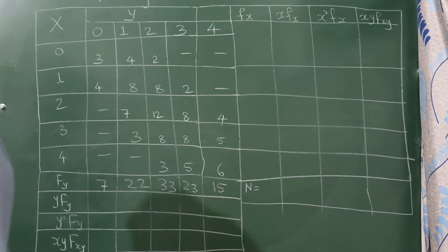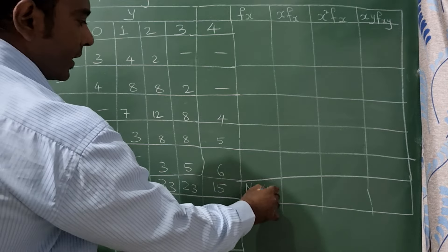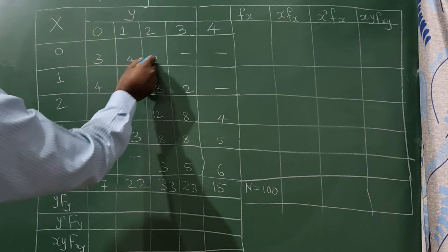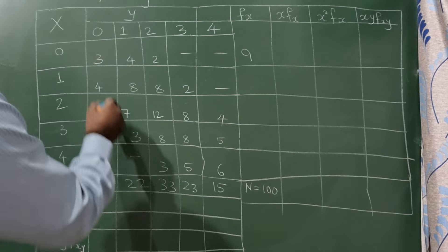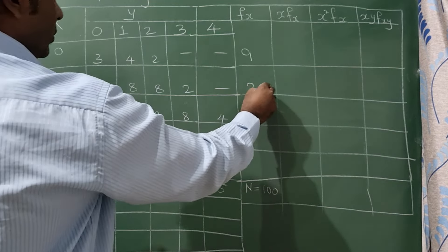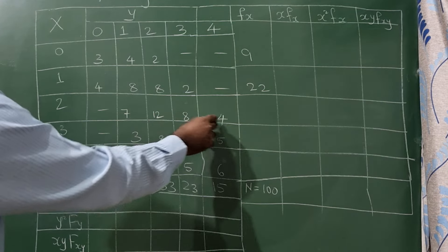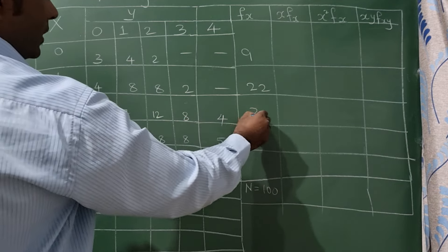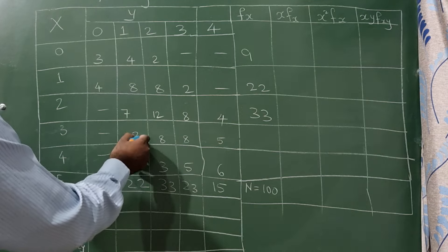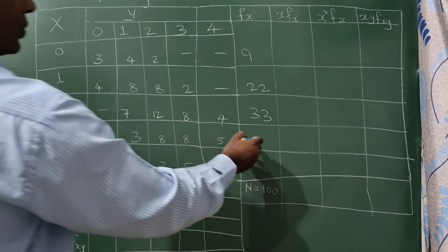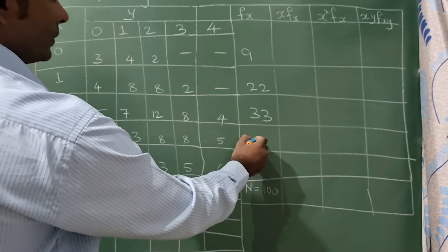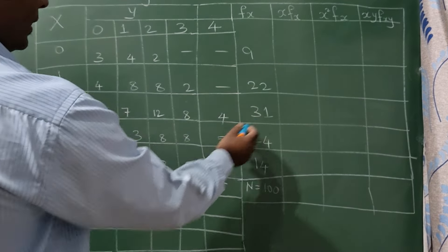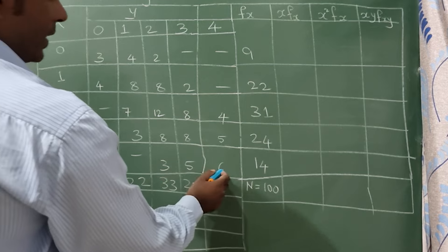Adding the row totals gives 100. Adding across the rows: 7, 8, 9 — summing gives 22, then 20, 27, and 33. For the y-side: 8, 9, 10 gives 19. Further totals come to 31, 24, and 14.